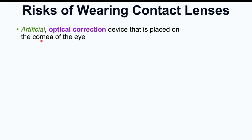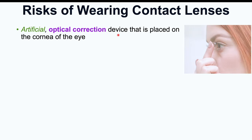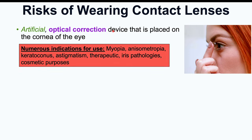Contact lenses are artificial optical correction devices that are placed on the cornea of the eye. The cornea is the thin transparent layer that covers the iris and the pupil. They are optical correction devices — a fancy way of saying they are used to treat different eye conditions. There are actually many indications for their use, including myopia, which would be nearsightedness. Many patients are going to use them for this purpose.